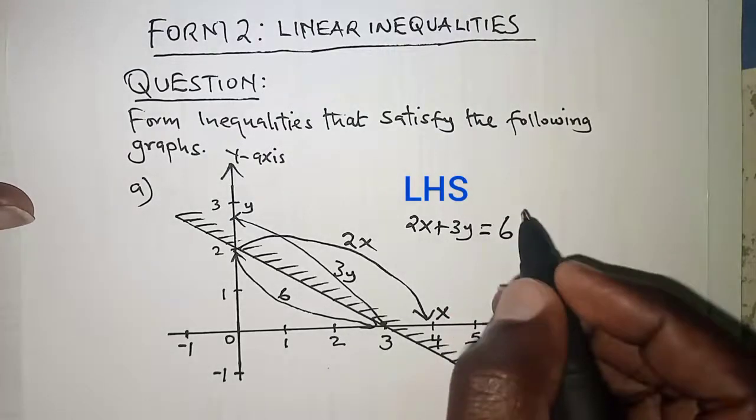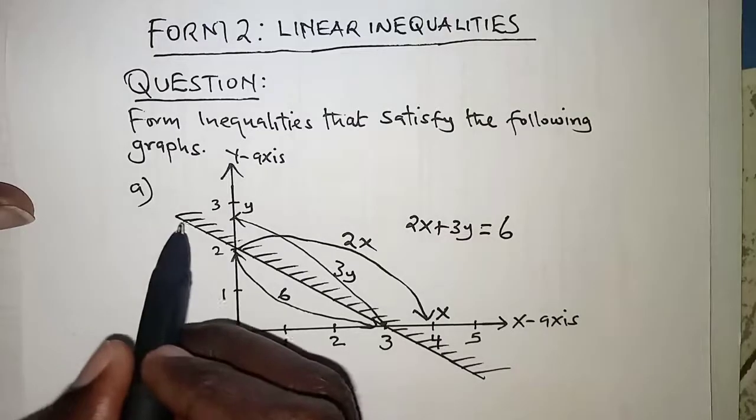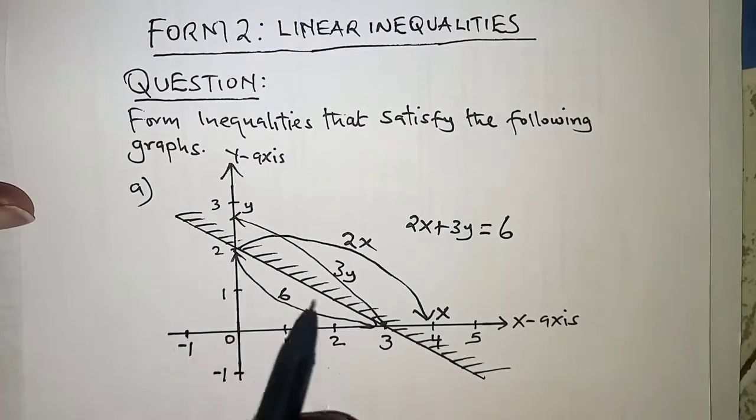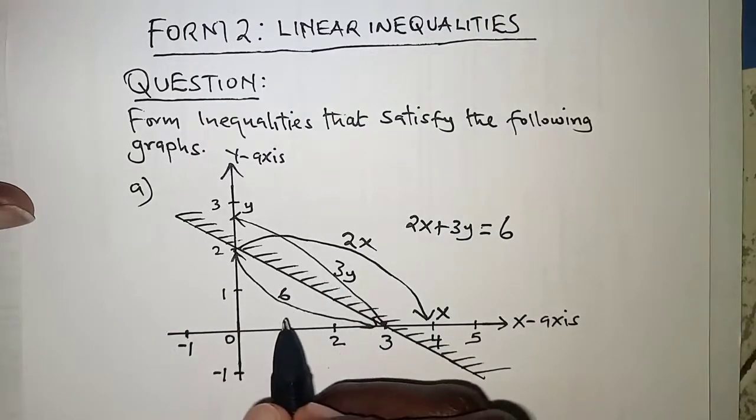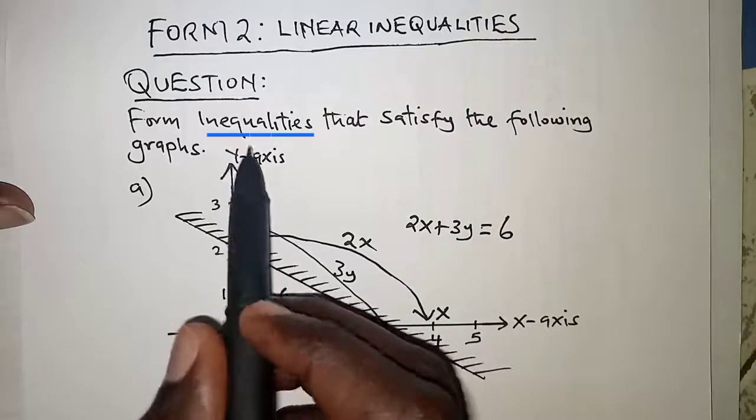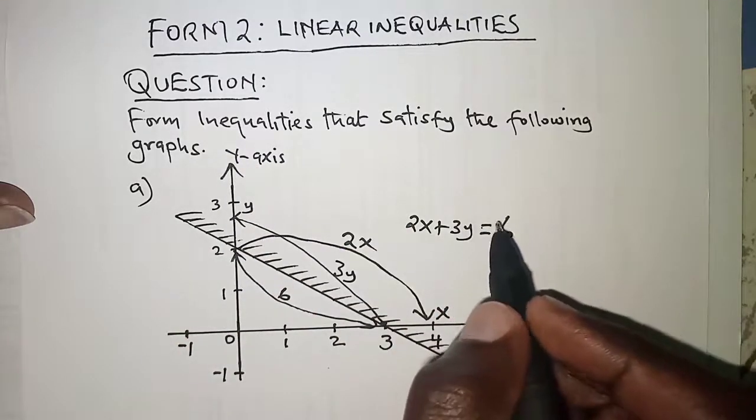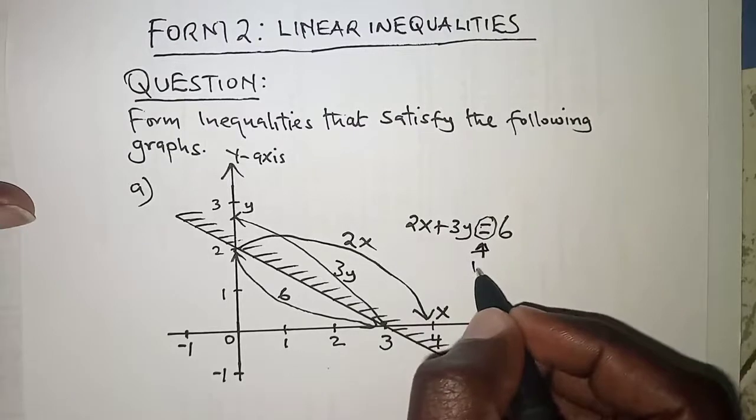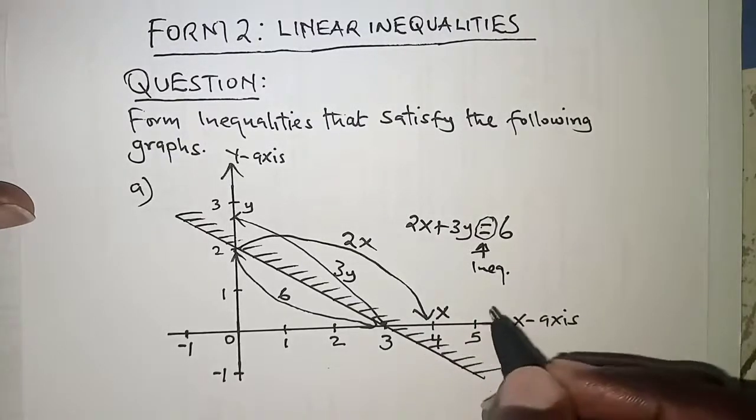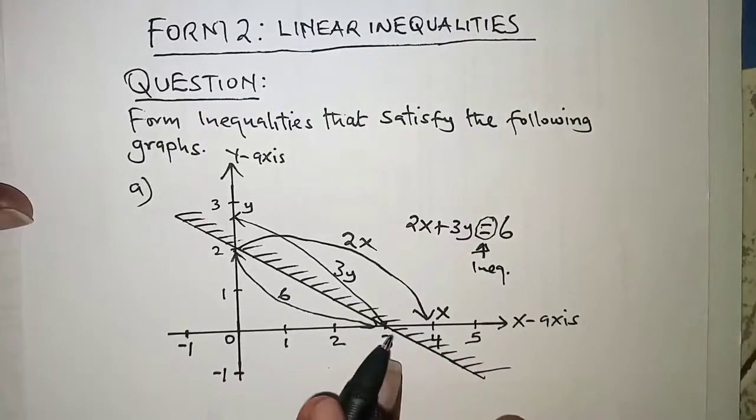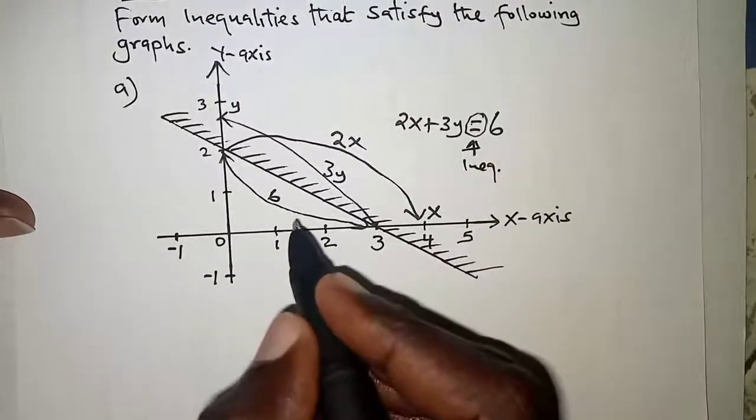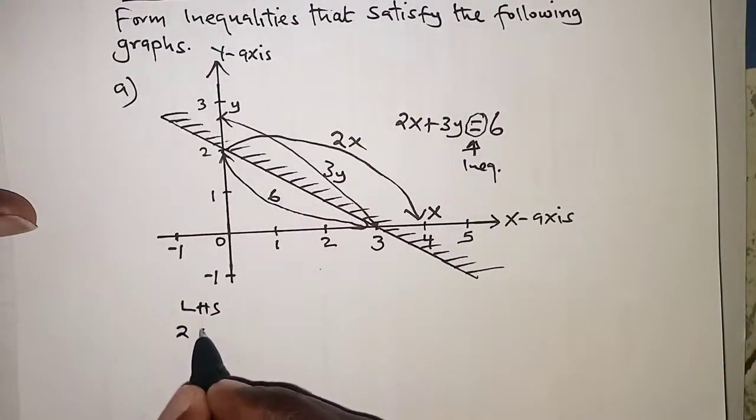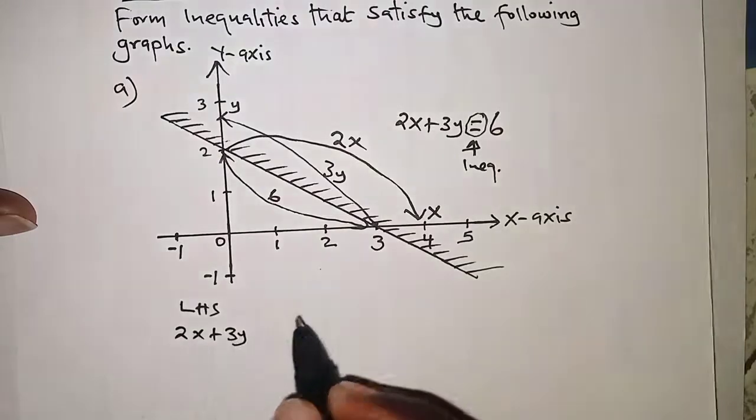This equation represents this line right here. Because we're interested in inequalities, we replace the equation with an inequality. The equal sign must be replaced by an inequality. So we have on the left hand side 2x + 3y and on the right hand side we have 6. Now look at how the shading has been done.